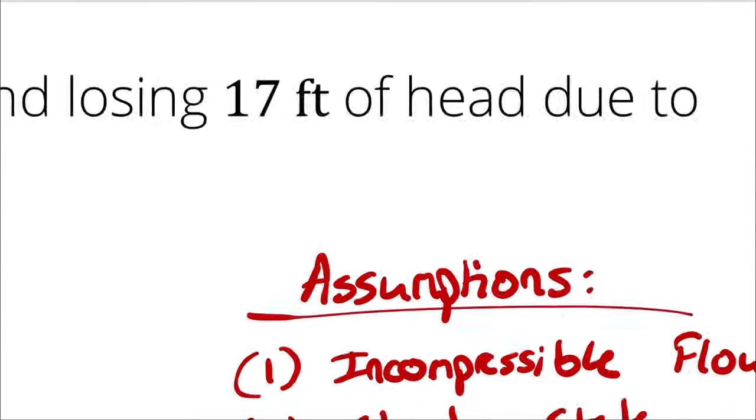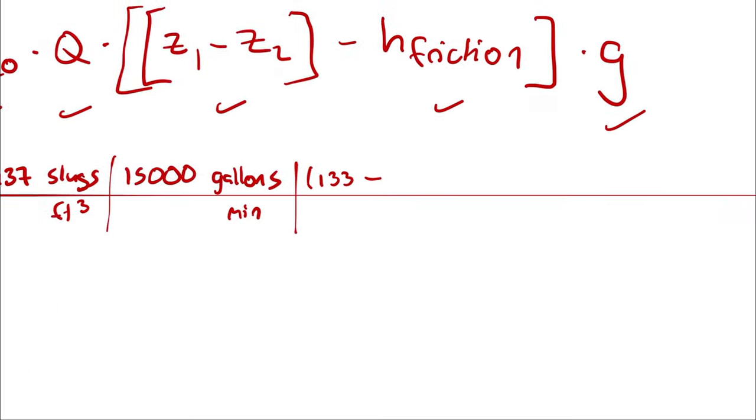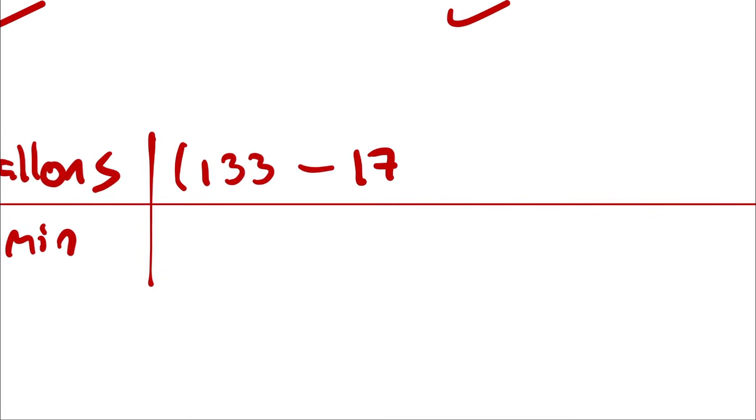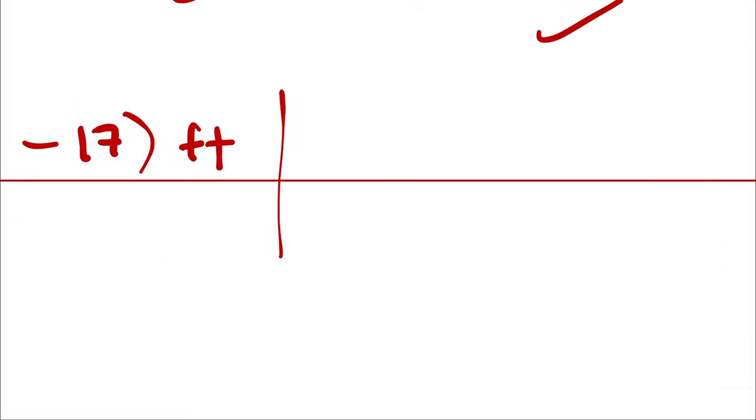133 minus our friction head, which was 17 of our length unit, 17 feet. And that is feet. And then I multiply by 32.2 feet per second squared.